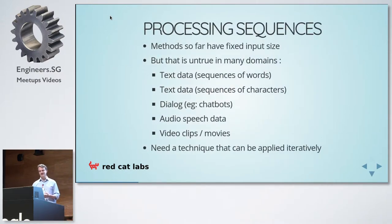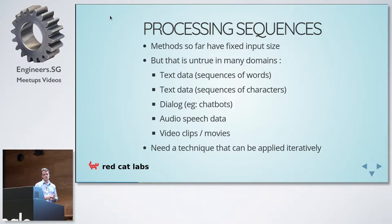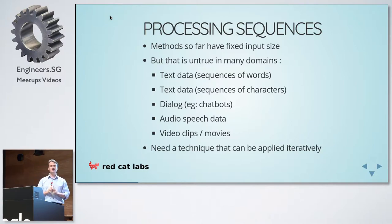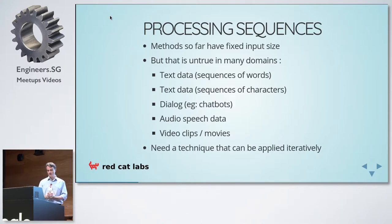A lot of real-world data occurs in a sequence. Whereas we often have fixed inputs, lots of domains have sequences of stuff. Text can be thought of as a series of words, or as a string of characters including spaces, or as a whole dialogue — a sequence of different events. Audio can be thought of as a whole sequence of 16-bit CD-quality values. Video is also a huge sequence of new events. What kind of technique can we apply to these again and again?